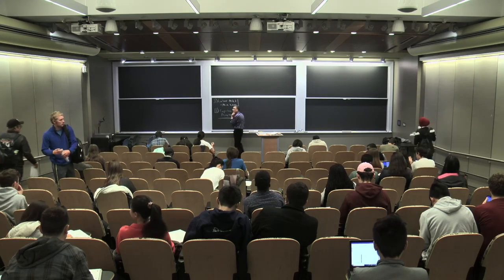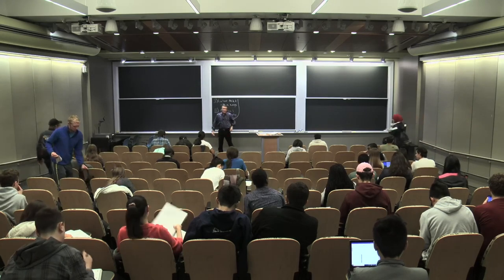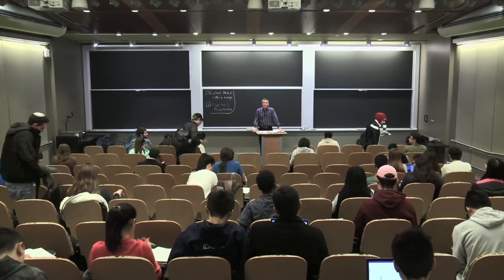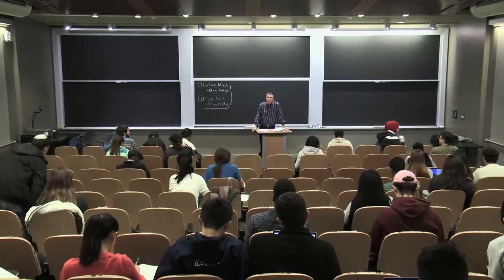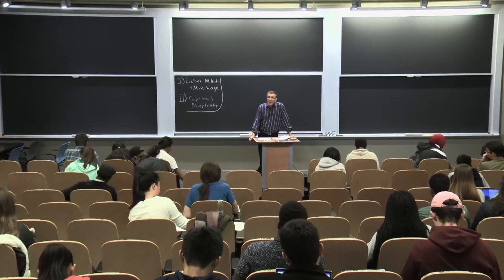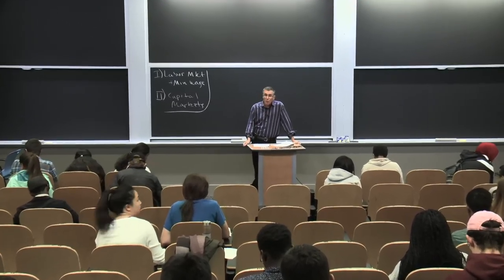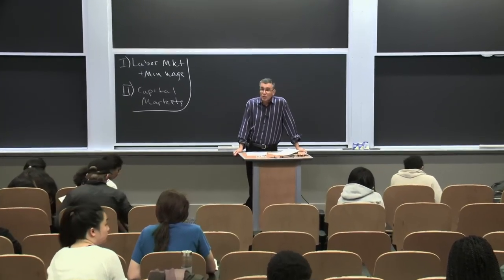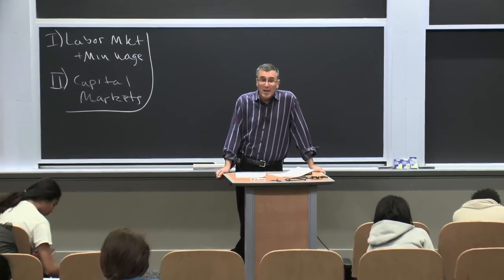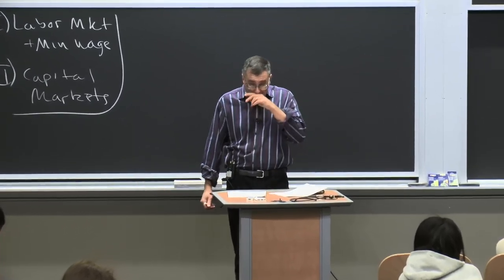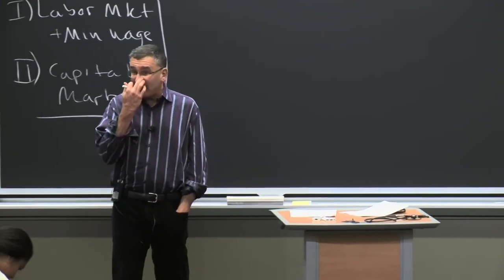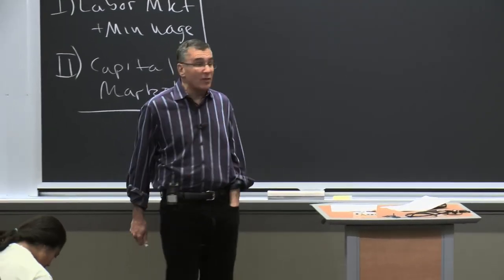Let's get started. Today we're going to continue our discussion of factor markets. If you recall, last Monday we started talking about the labor market. We talked about how workers make the decision between work and leisure, and the implications for setting the wage rate. What I want to do today is return to that labor market equilibrium and talk about the important case of the minimum wage.